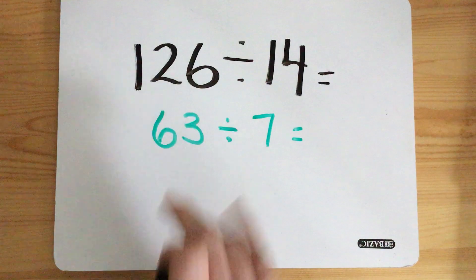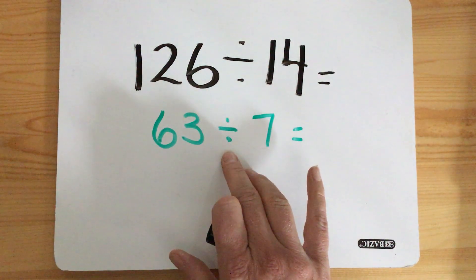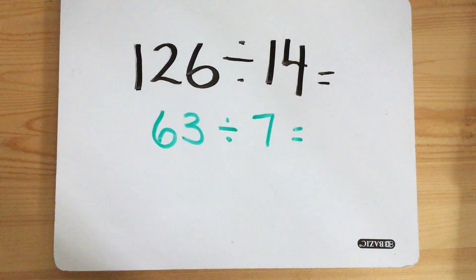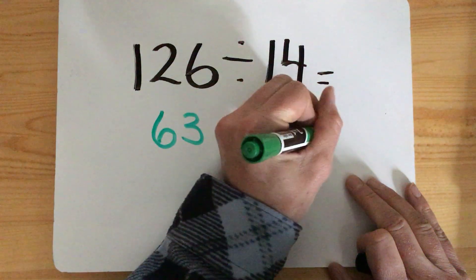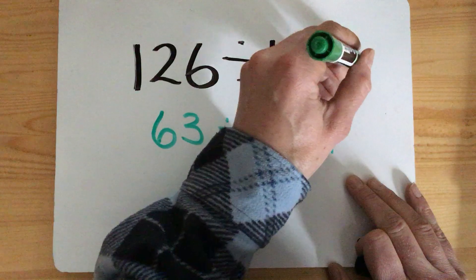So now we've halved it and we should be able to look at this and do that in our heads. What's 63 divided by 7? 7 times what equals 63? 9. So then that means 126 divided by 14 is 9.